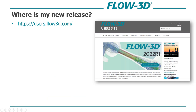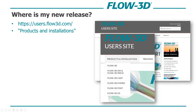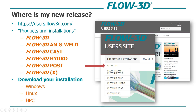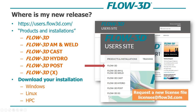So where's my new release? It's on the user site. Go to users.flow3d.com — there is a section that says Products and Installation. These products include all our releases: Flow3D, AM and Weld, Cast, Hydro, Post, and Flow3D X. Download your installation in either Windows, Linux, or if you're using the HPC high performance computing version of any Flow3D products. You'll also probably need a new license, which you can request from licenses@flow3d.com.